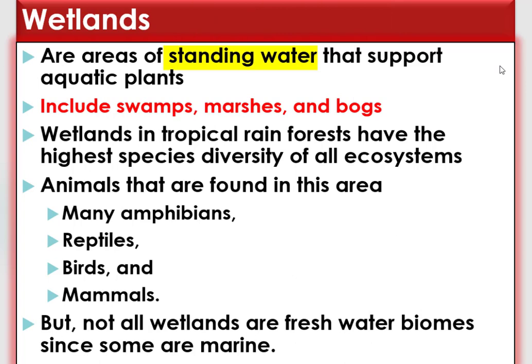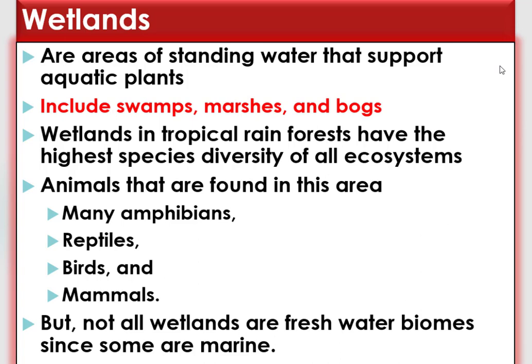Wetlands are areas of standing water that support aquatic plants. Wetlands include swamps, marshes, and bogs. Wetlands in tropical rainforests have the highest species diversity of all ecosystems. Animals found in this area include many amphibians, reptiles, birds, and mammals. However, not all wetlands are freshwater biomes because some are marine wetlands that contain salty water.